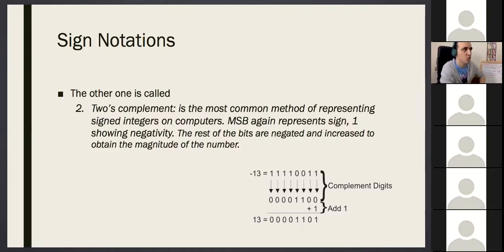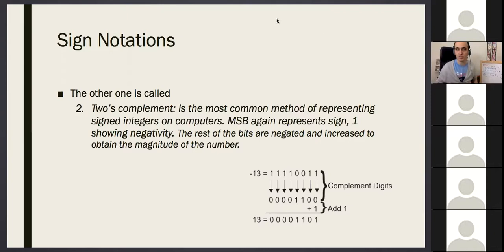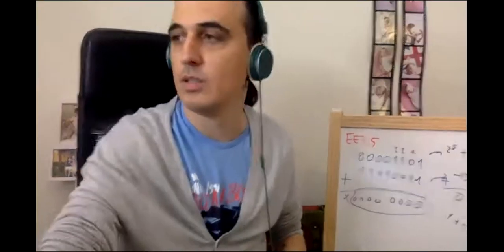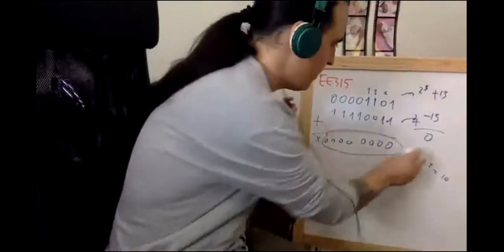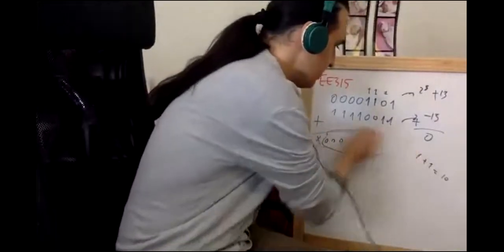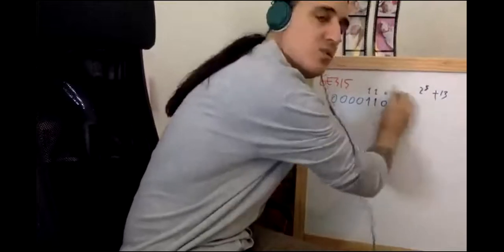A student asks: how do you write 13 using 4 bits — in which notation, signed magnitude, two's complement, or no sign? The answer is: you can't. The number of bits limits the numbers you can represent.